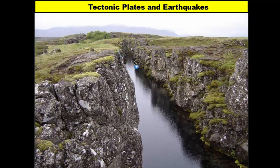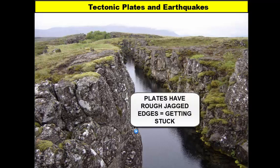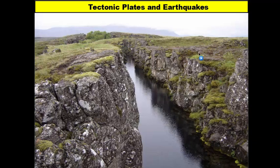The reason why earthquakes happen is because our tectonic plates move and tend to get stuck. They get stuck because the edges of the plates are not exactly smooth and flat. Unlike divergent boundary plates that move away from one another, transform boundaries have plates that slip past one another and get stuck, and convergent boundaries have plates that collide and get stuck.